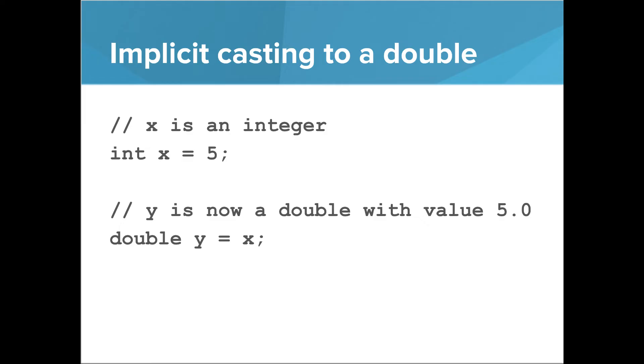Interestingly, you can actually cast from an int to a double without using double in parentheses. This is referred to as implicit casting. Implicit casting is when Java automatically casts the value correctly without the programmer needing to do so. Java will cast an int to a double but will not be able to cast a double to an int implicitly.